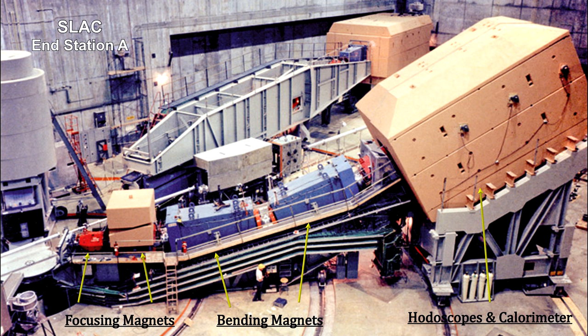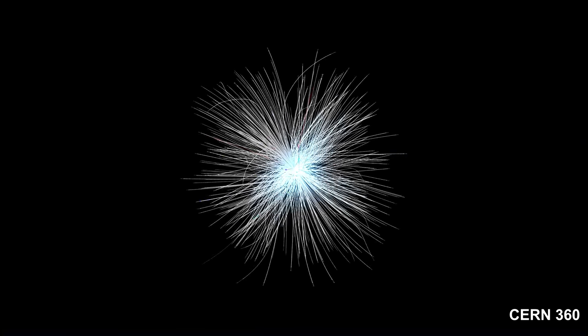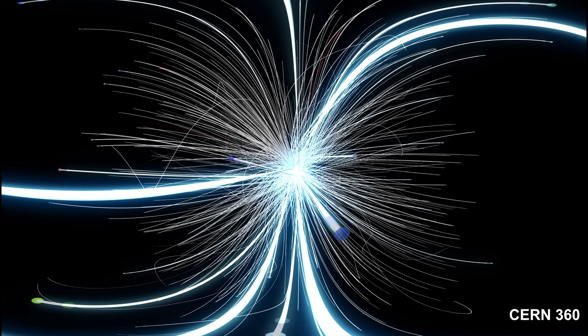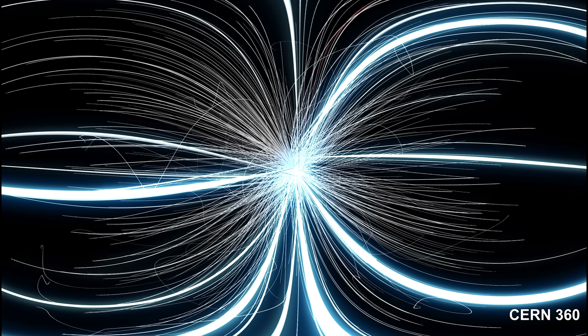Putting all these pieces together gives us the complete linear accelerator detector, which weighs 750 tons. The Stanford Linear Accelerator was built to probe the proton with electrons, like Rutherford probed the atom with alpha particles — both used scattering techniques. These techniques are key to understanding how the Higgs particle was found at CERN in 2012.